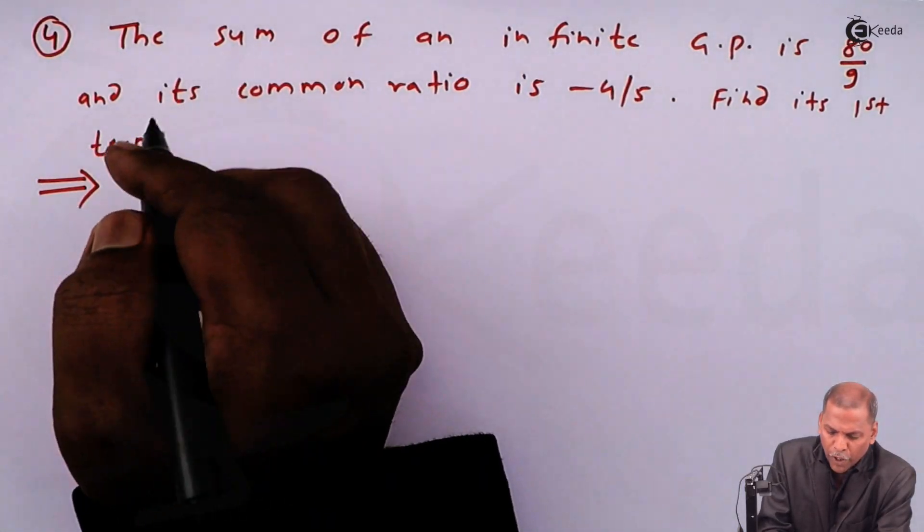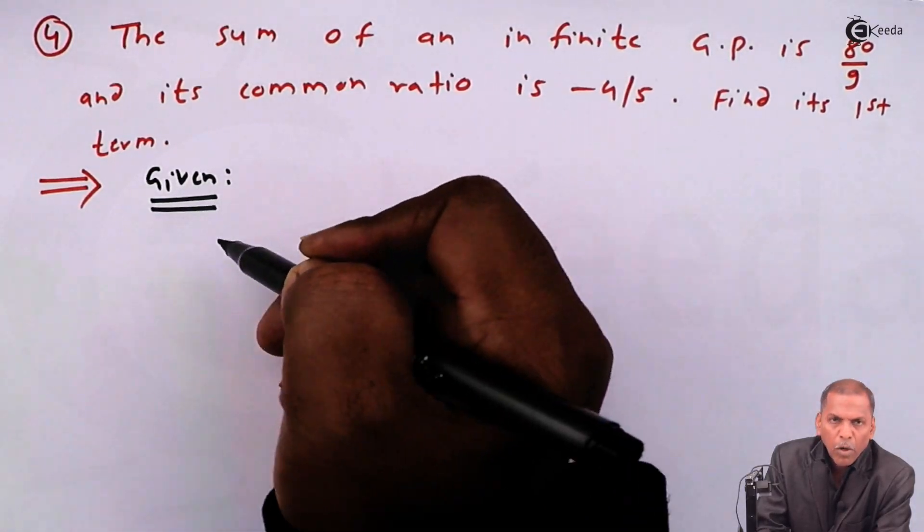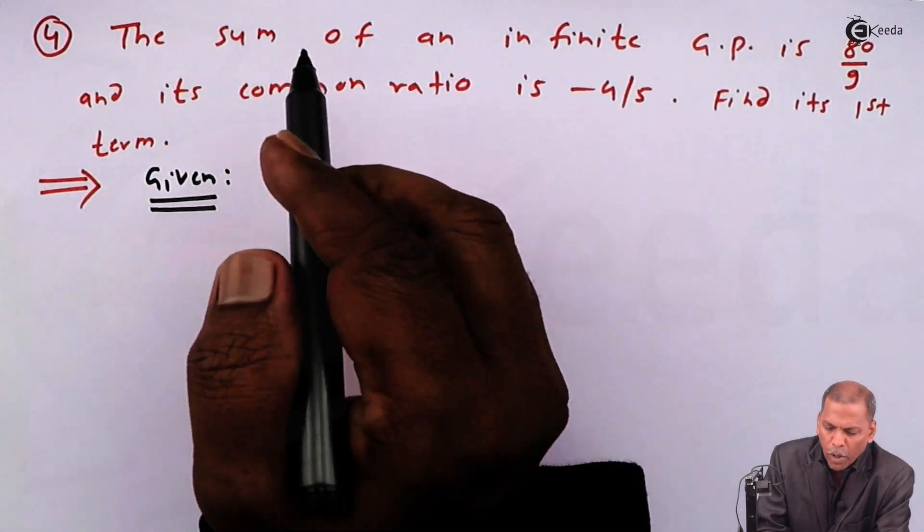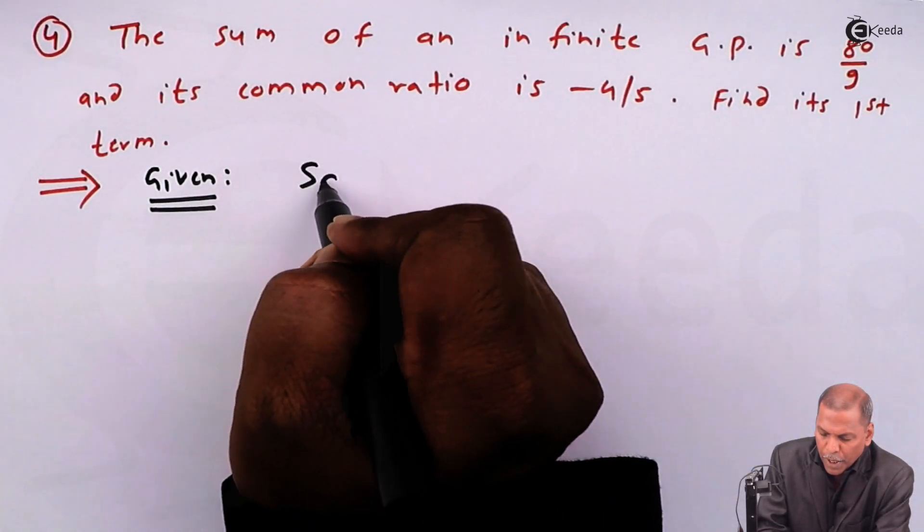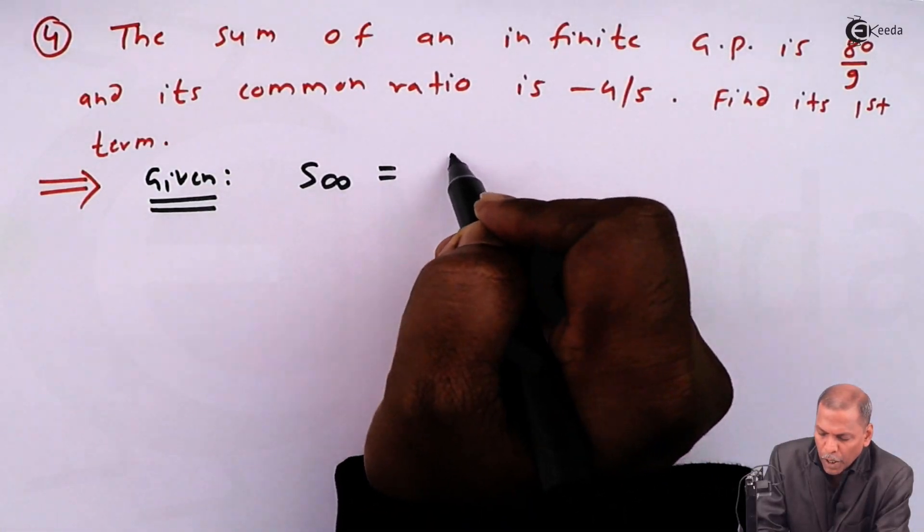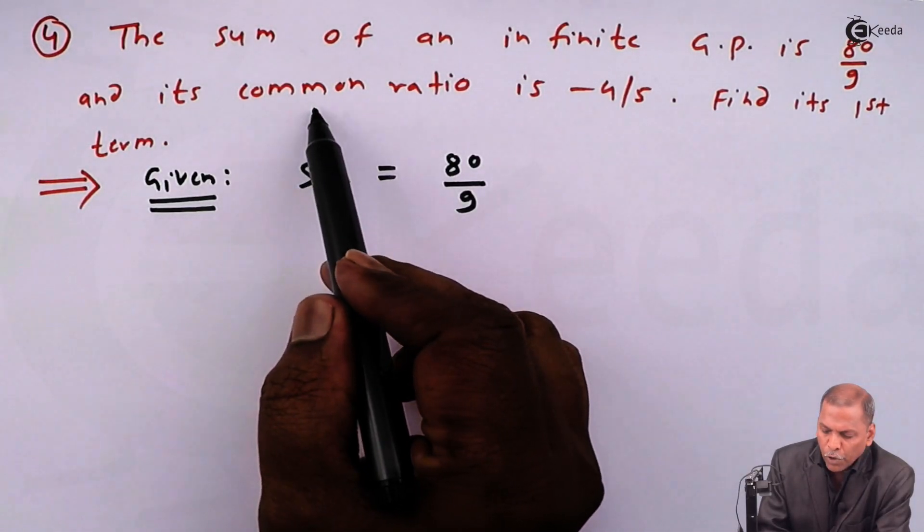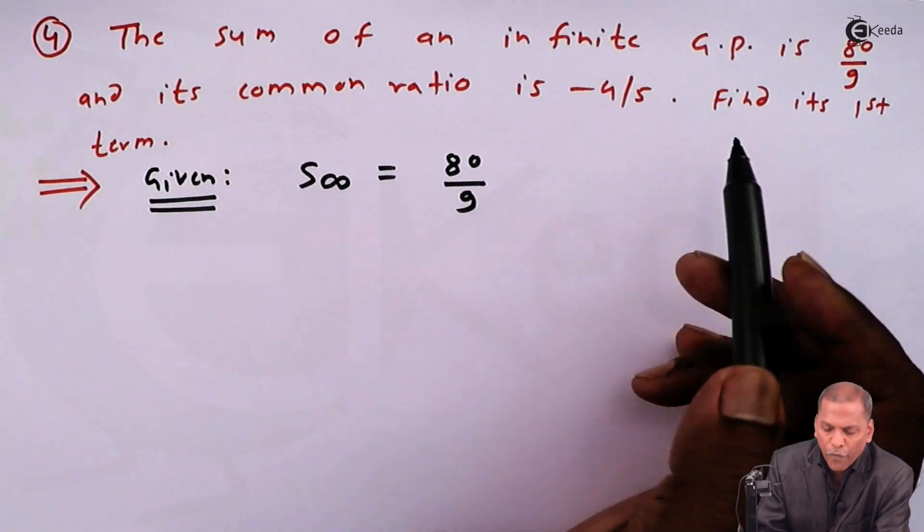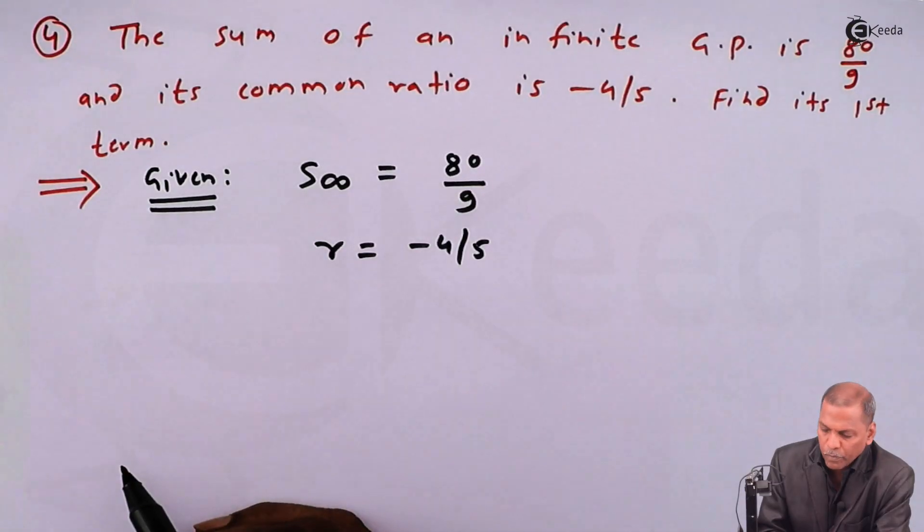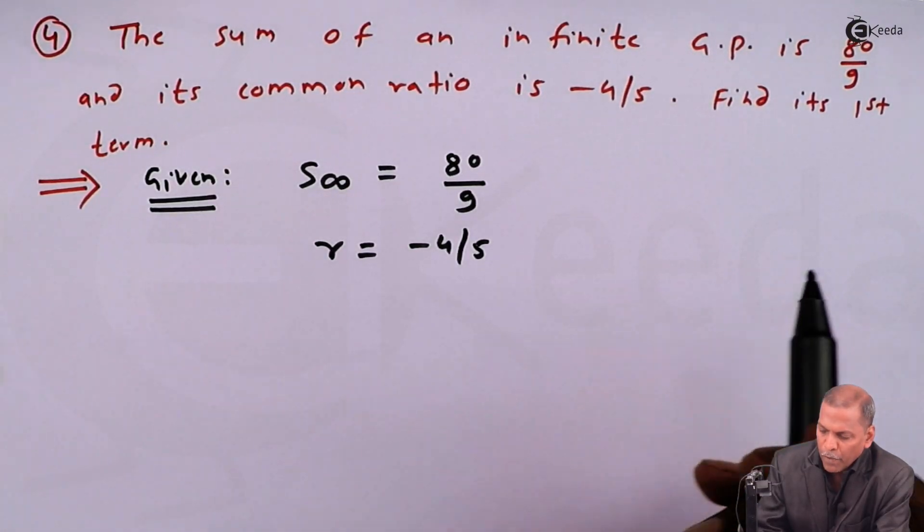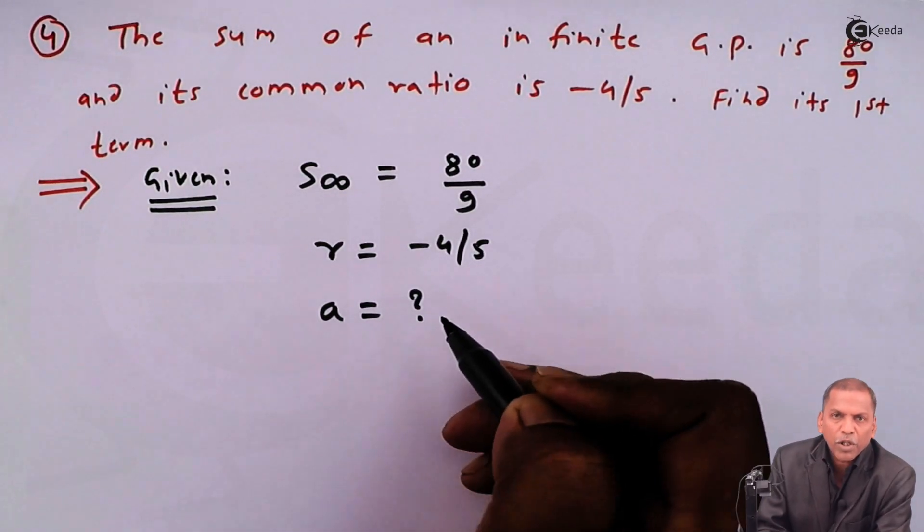Now let's see the solution. The solution is very simple. First of all, we write given. According to the problem, sum of an infinite GP is 80 upon 9, it means S infinity is equal to 80 upon 9. Secondly, common ratio is minus 4 upon 5, it means r is equal to minus 4 upon 5. And finally, we have to find the first term, it means a is equal to question mark.